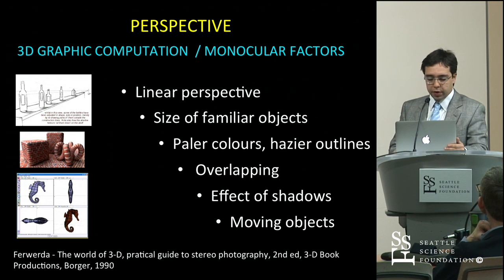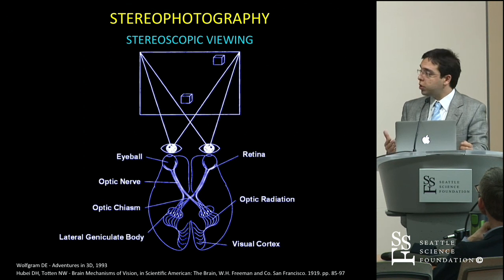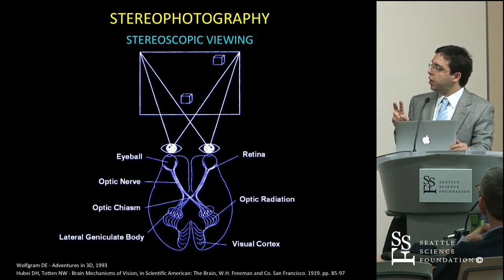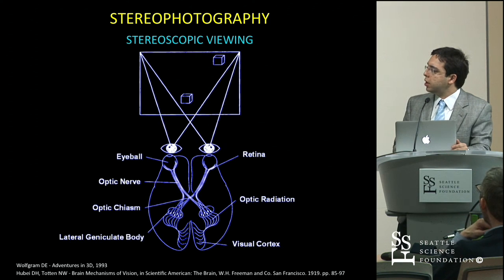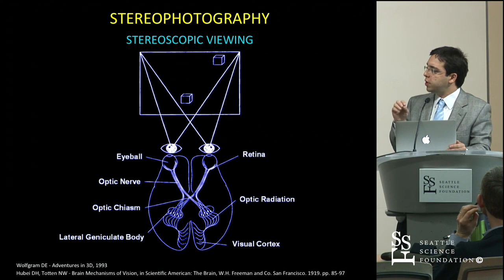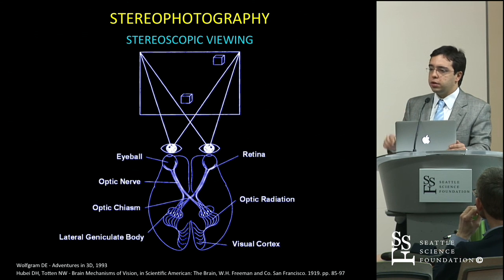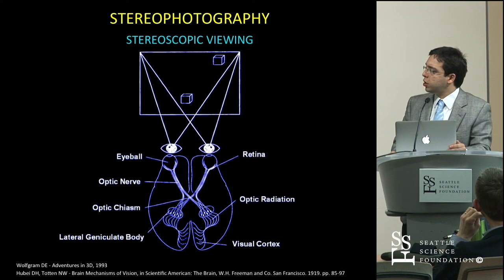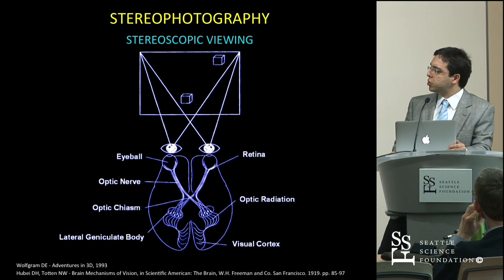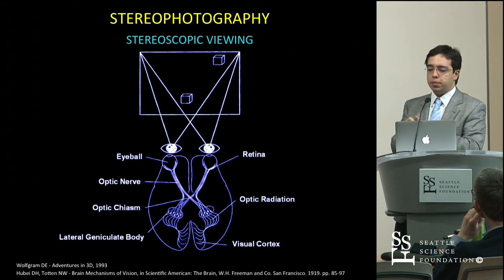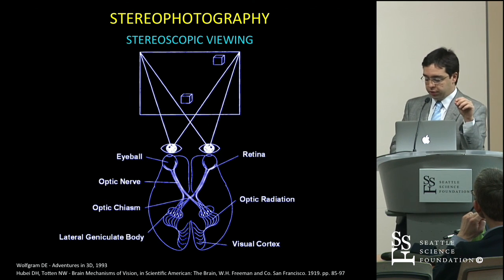You just have this illusion of depth. Stereo photography, or real 3D, can only happen if you have two images and deliver one image to each eye. This replicates what happens when we are naturally seeing a scene. Because each eye is in a different position, each eye has a different point of view and gets a slightly different perspective. Both images are carried to our visual cortex at the occipital lobe and then fused together, giving each object a different perceived depth.